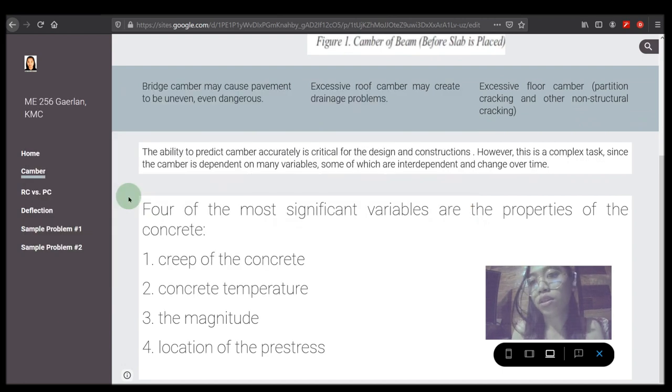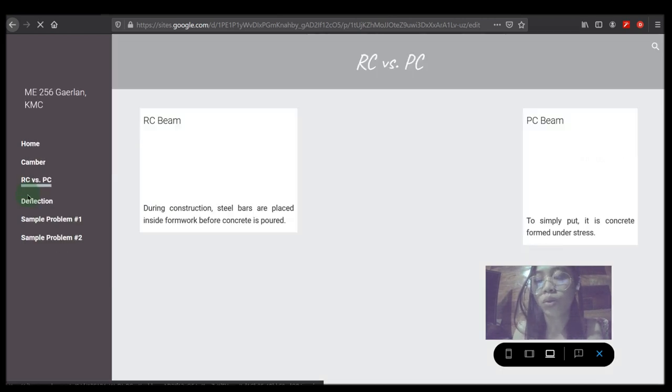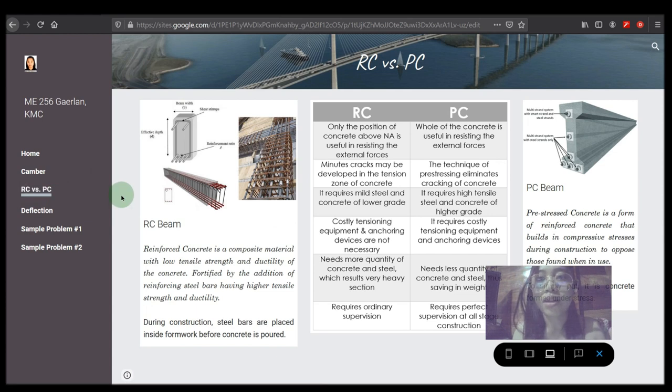Reinforced concrete is a composite material with low tensile strength and ductility of the concrete fortified by the addition of reinforcing steel bars having higher tensile strength and ductility. Prestressed concrete is a form of reinforced concrete that builds in compressive stresses during construction to oppose those found when in use.